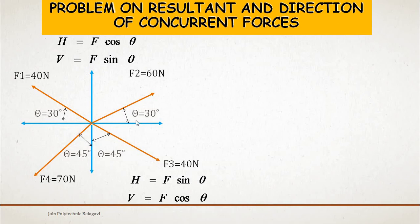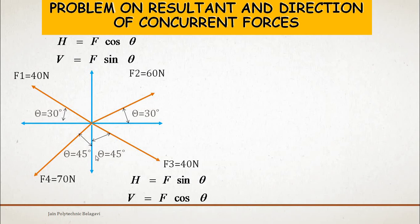For y-axis forces, the triangle is formed differently: here the adjacent side is vertical, not horizontal. If you shift the horizontal component to form the triangle, the horizontal component is opposite to the angle, so it equals F sin θ. The vertical component is adjacent over hypotenuse, so it is F cos θ. These two formulas hold for F3 and F4 because their directions are measured with respect to the y-axis.